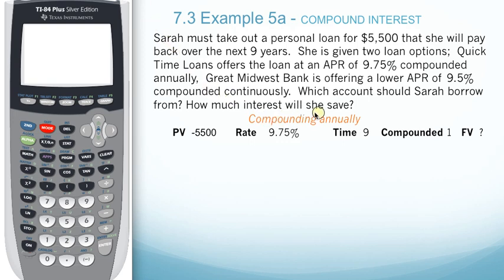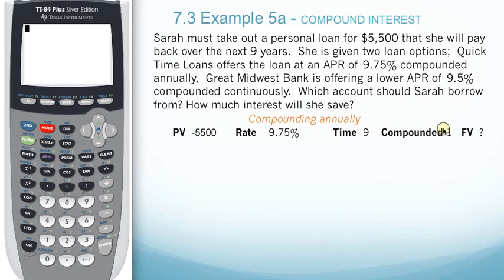Looking at the values for compounding annually, we have a present value or principal of $5,500. We have a rate of 9.75%. The time will be nine years, and compounding periods will be one, because we're compounding annually for the first loan. We want to solve for future value.